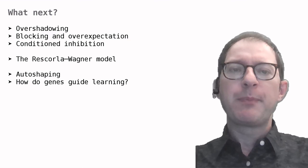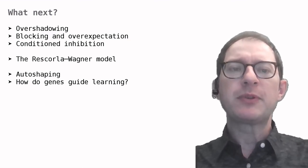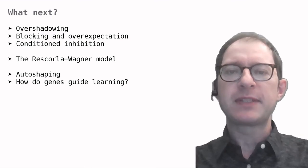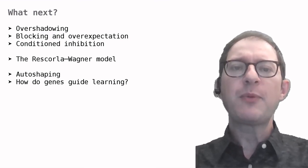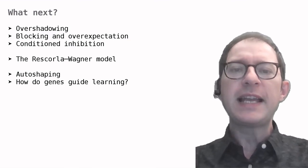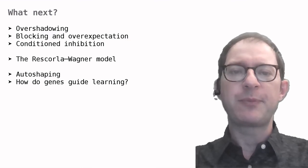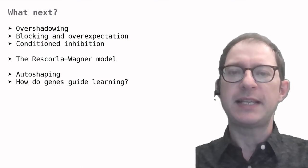The lessons on overshadowing, blocking and overexpectation, and conditioned inhibition continue to explore the theme of animals as naive detectives. Lessons on the Rescorla-Wagner model will show an explanation of the effect of contingency. The lesson on auto-shaping and the one on genetic guidance of learning will discuss some exceptions to the results we have seen in this lesson.